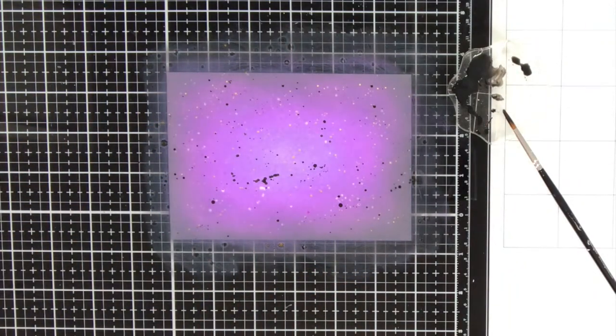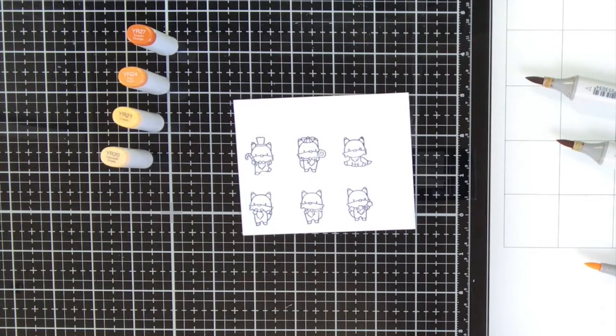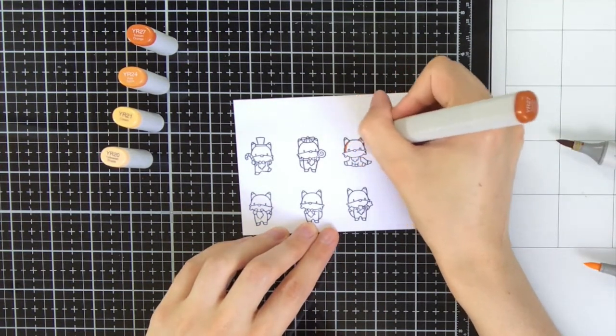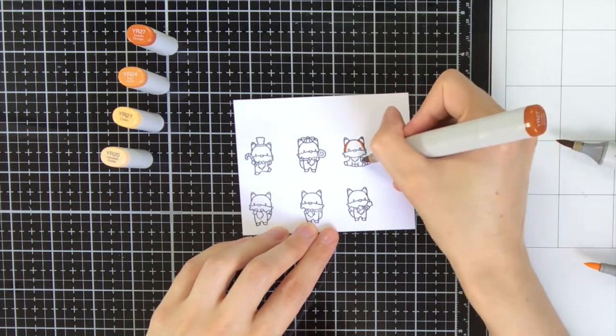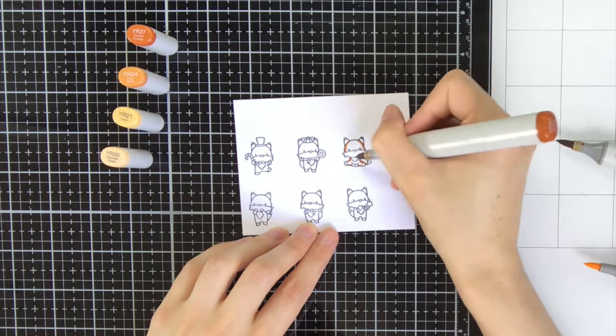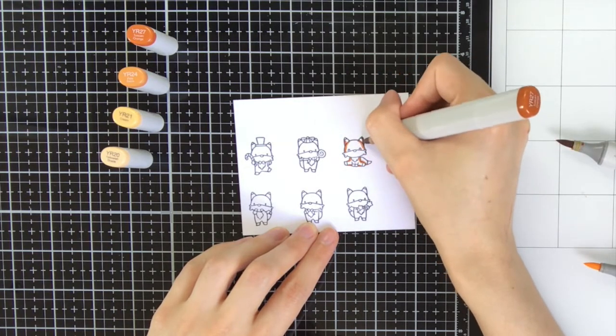Off camera I have also added some gold splatters to the background, but I will show you later how I created the gold splatters because I did the same with the sentiment. Now the background is done and I set it aside to dry, and in the meantime I'm working on the copic coloring of the little foxes.